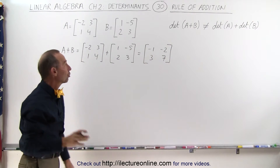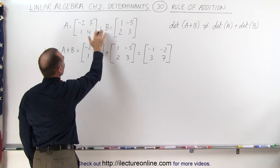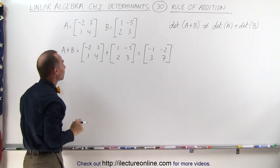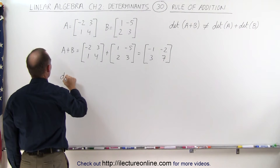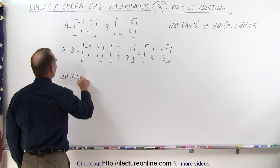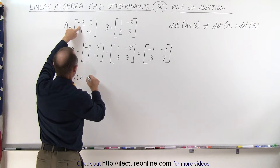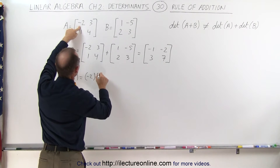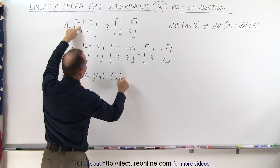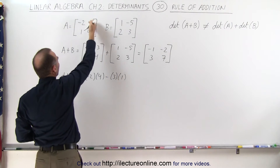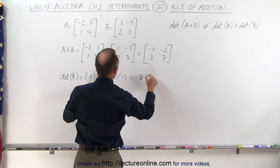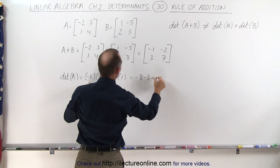Now we are going to take the determinant of A, the determinant of B, and the determinant of A plus B, starting with the determinant of A. That would be minus 2 times 4 minus 3 times 1 — the product of those two minus the product of those two — which equals minus 8 minus 3, which is minus 11.